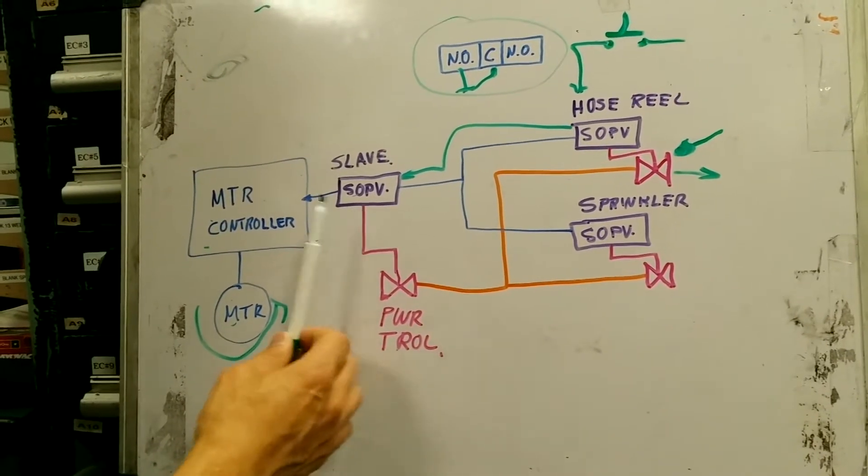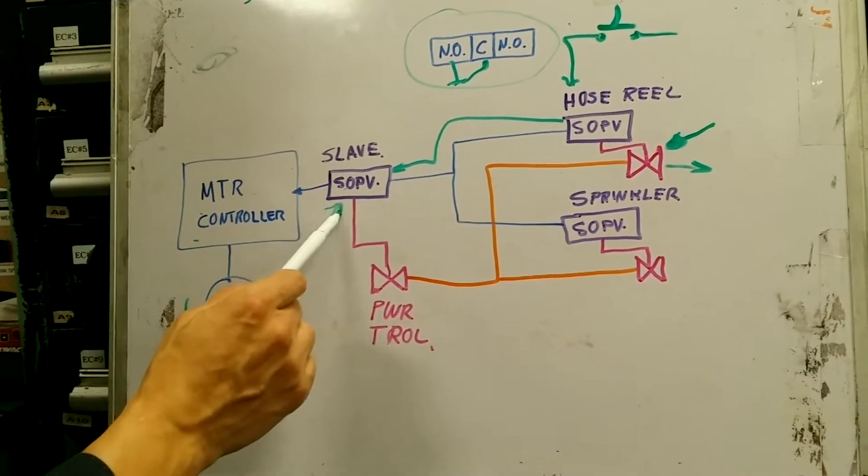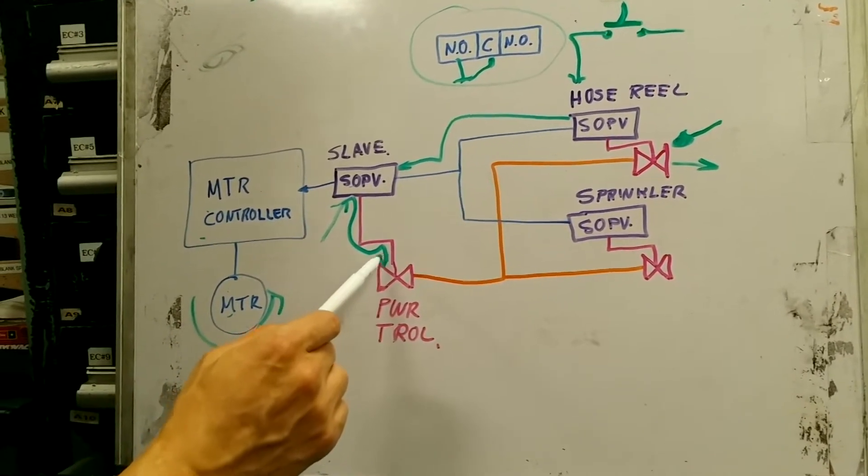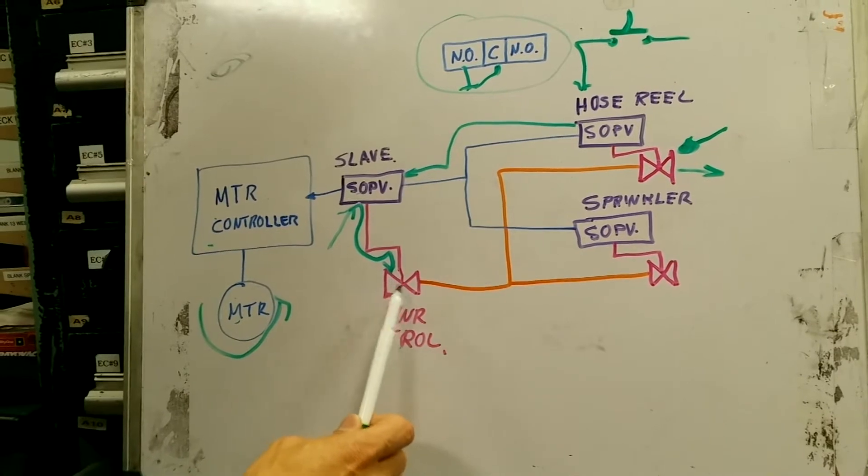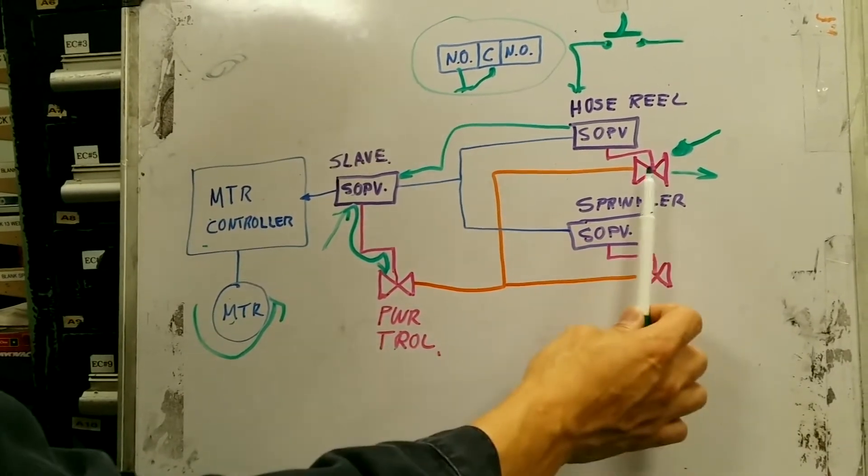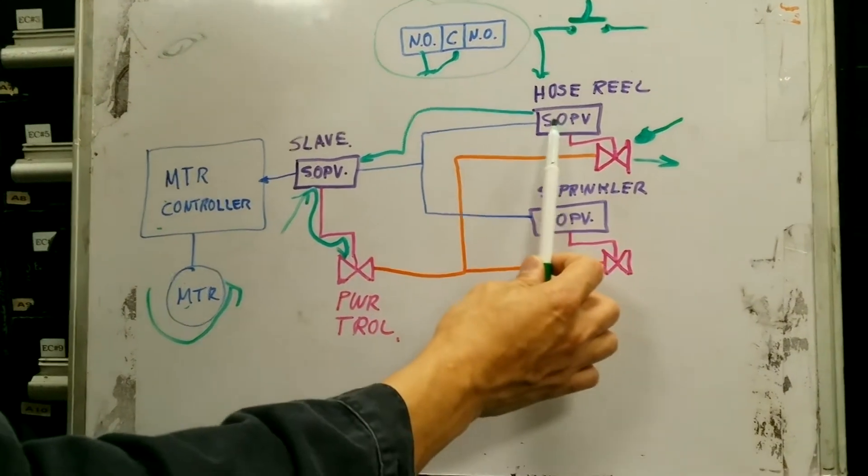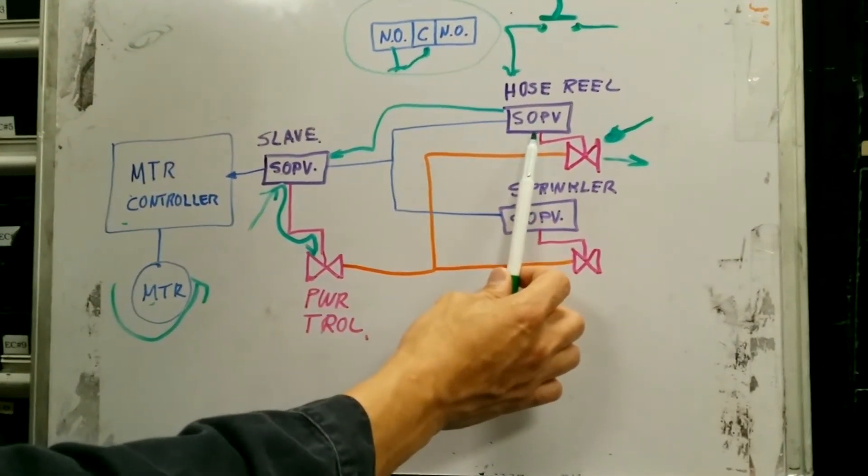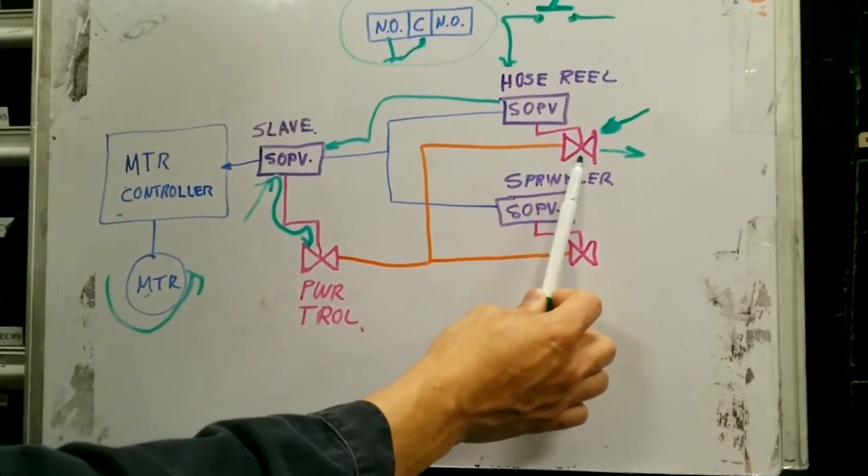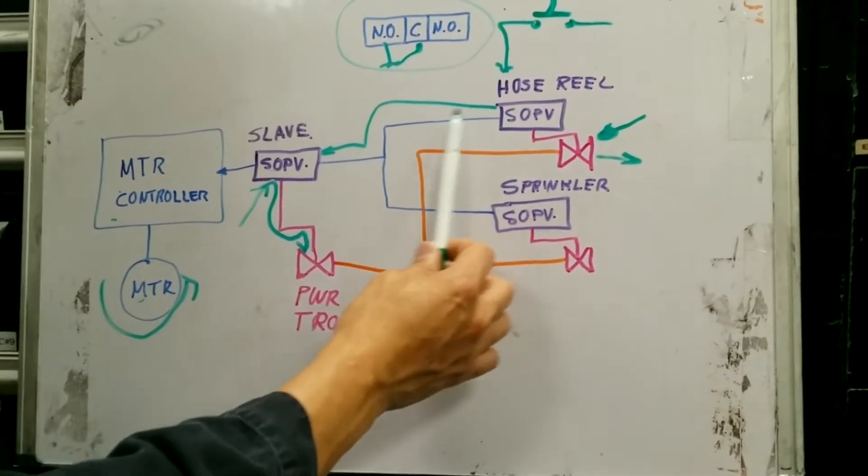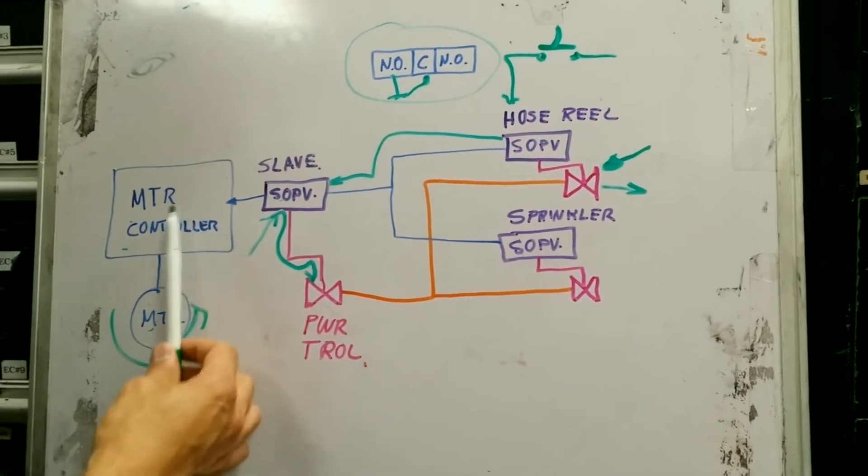At the bottom here, you got seawater going in, and pretty much what it does is it puts hydraulic pressure into this power troll valve to open it, and same thing for the local hose reel valve. So the valve does both mechanical actuation of a valve via hydraulic medium, and then also will electrically energize another valve.